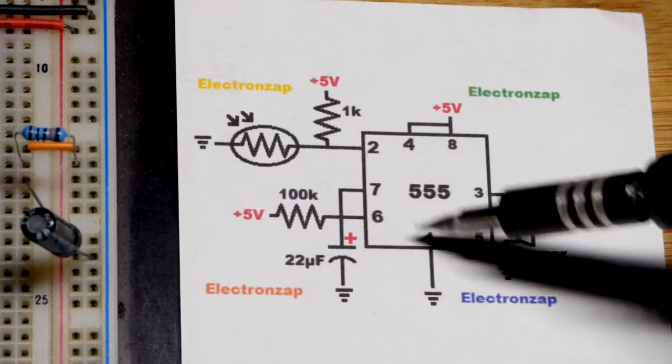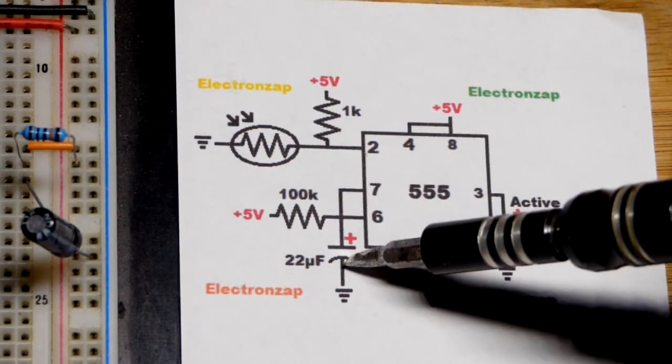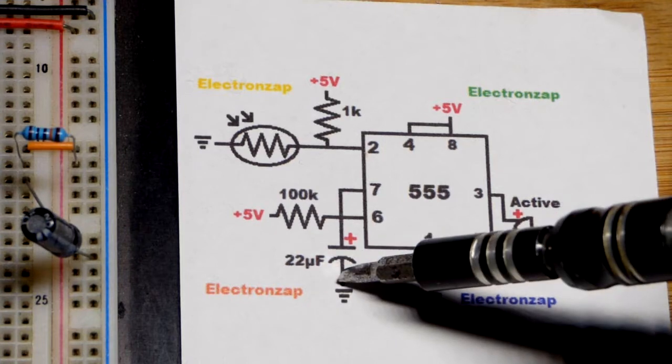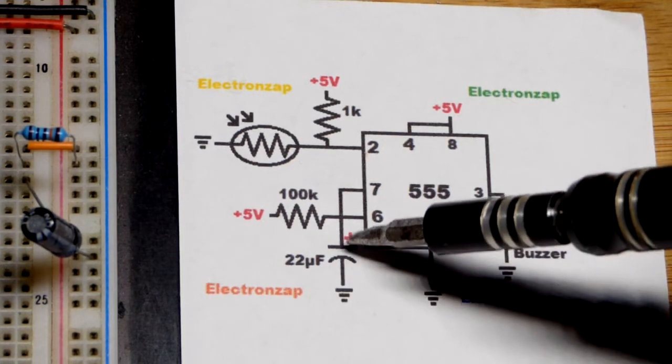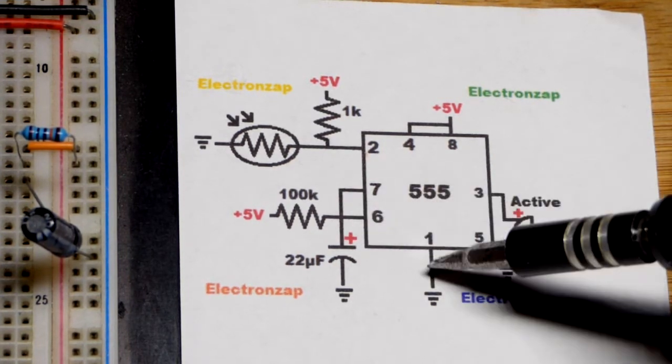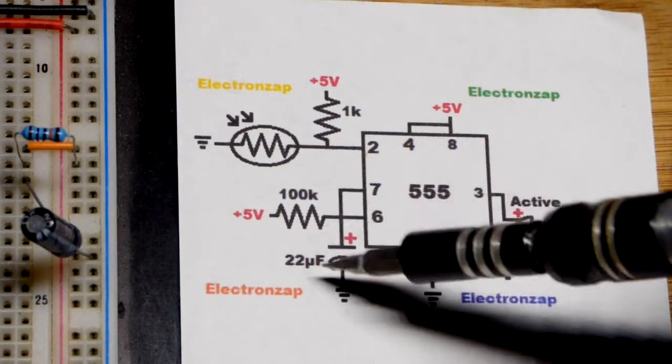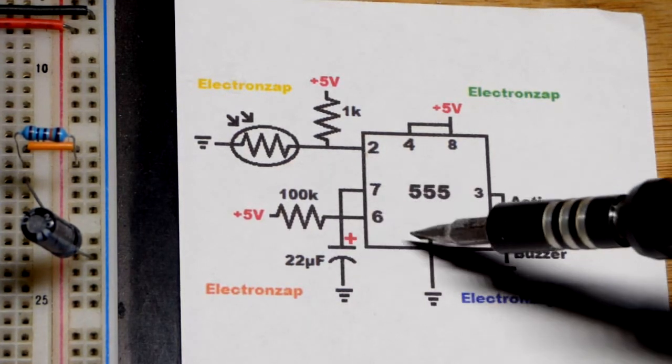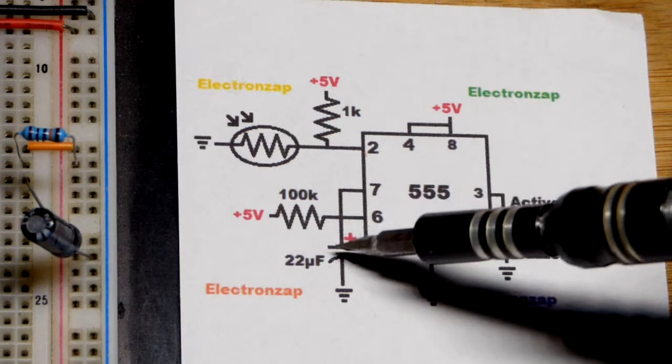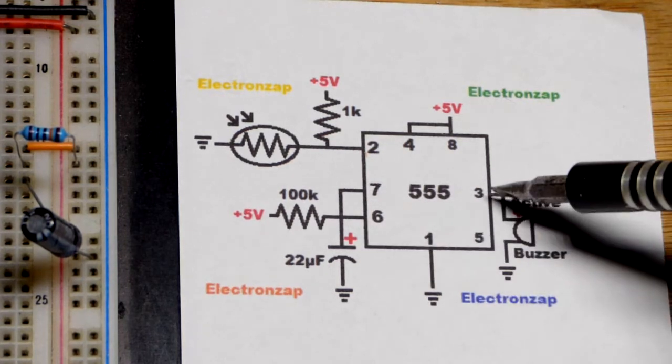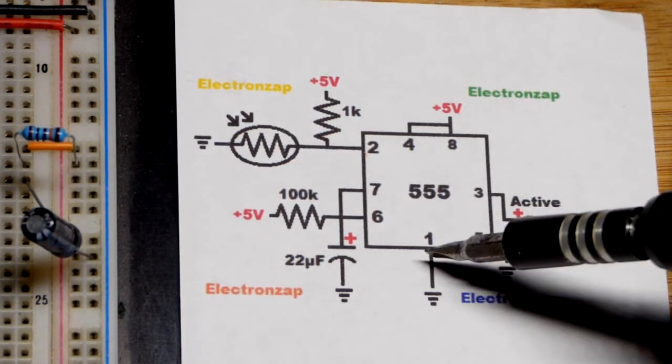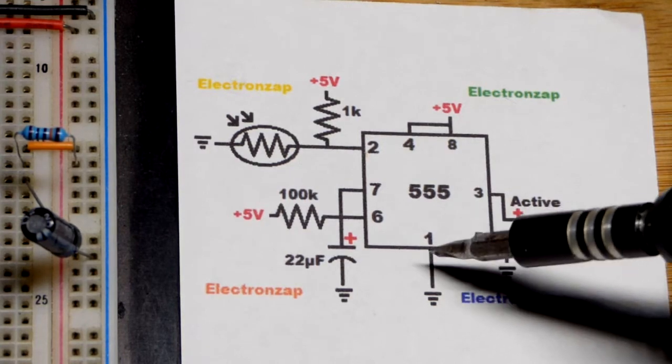When it hits two-thirds of the supply voltage, pin 7 goes from an off switch to connecting to ground and discharges the capacitor instantly. That's one reason why I used a lower value capacitor here, so that not a ton of current flows through. With these two values you saw the timing we got.